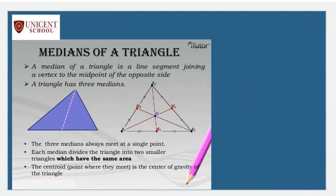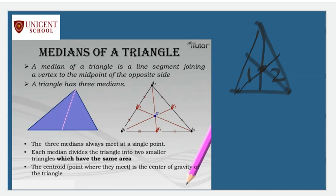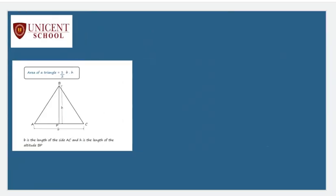Now let's learn about medians of a triangle. A median of a triangle is a line joining the vertex and the midpoint of the opposite side. This median divides the triangle into two triangles of equal areas. A triangle can have three medians, and the point of intersection of these three medians is called the centroid, which is the center of gravity of the triangle.